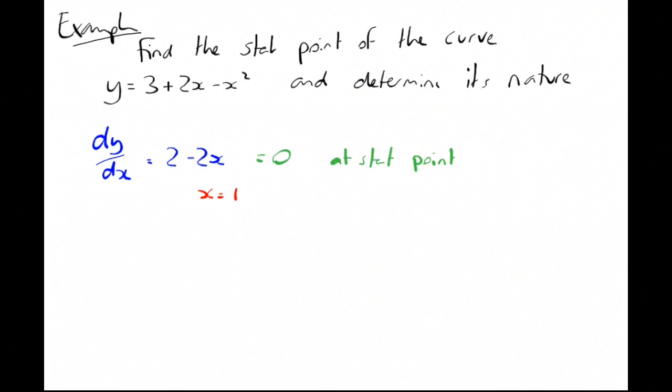If x is 1, plug it back into the original equation. Y equals 3 plus 2 minus 1, so y is 4. So our stationary point is at the point (1, 4). The second derivative of that is just going to be minus 2. It doesn't matter what my x value is, the second derivative is always minus 2, because it's a sad quadratic. It's always going to give you a negative. So the second derivative is minus 2. That's negative, so therefore, it's a maximum point.